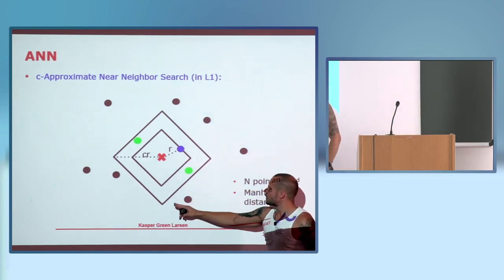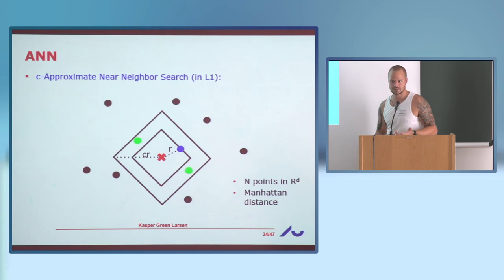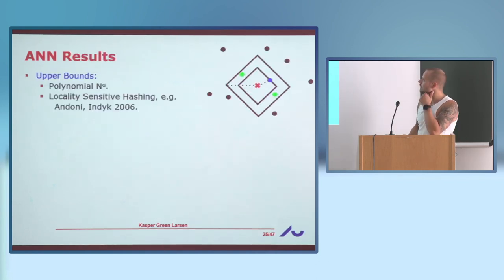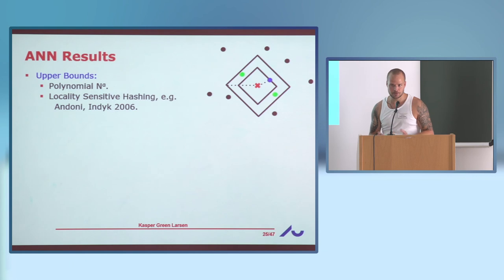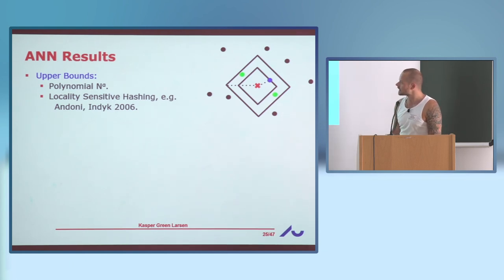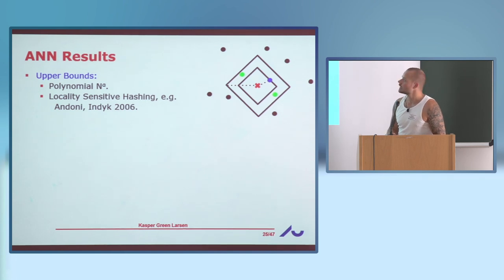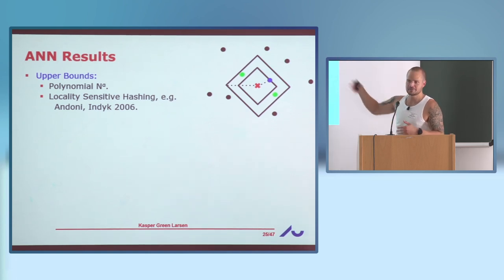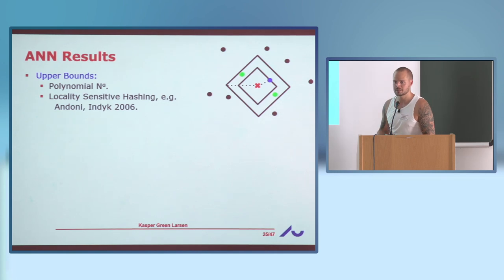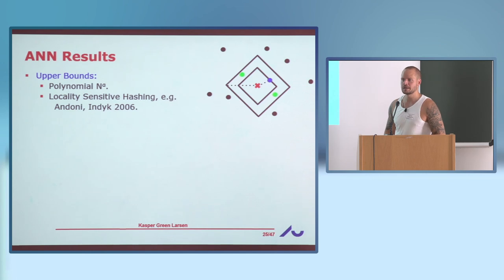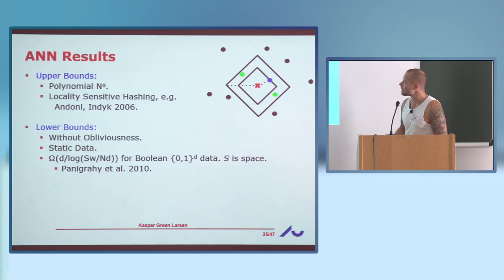Basically the nearest neighbor is in the green region and it's OK to return any of the green points when answering the query. The upper bounds for this problem are polynomial in N to a constant less than one, based mostly on locality-sensitive hashing, and this is actually independent of the dimension. The lower bounds have been well studied even without any obliviousness assumption. In the static case, if you use S words of space, there's a lower bound of D divided by log(SW/ND) — a space-time tradeoff. The trivial lower bound is D/W, since the nearest neighbor output has D bits.